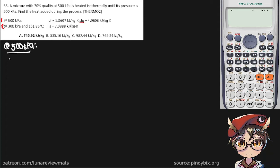Let's call this SF1, 1.8607 kilojoules per kilogram Kelvin and let's call this one SFG1 which is 4.9606 kilojoules per kilogram Kelvin, and for the second state we have 300 kPa.